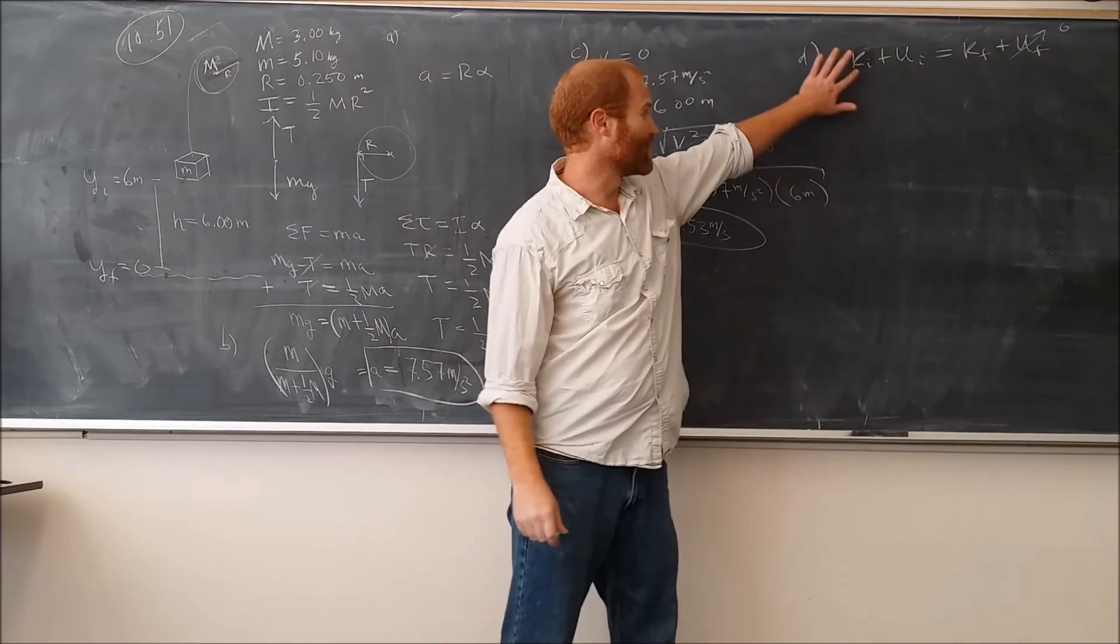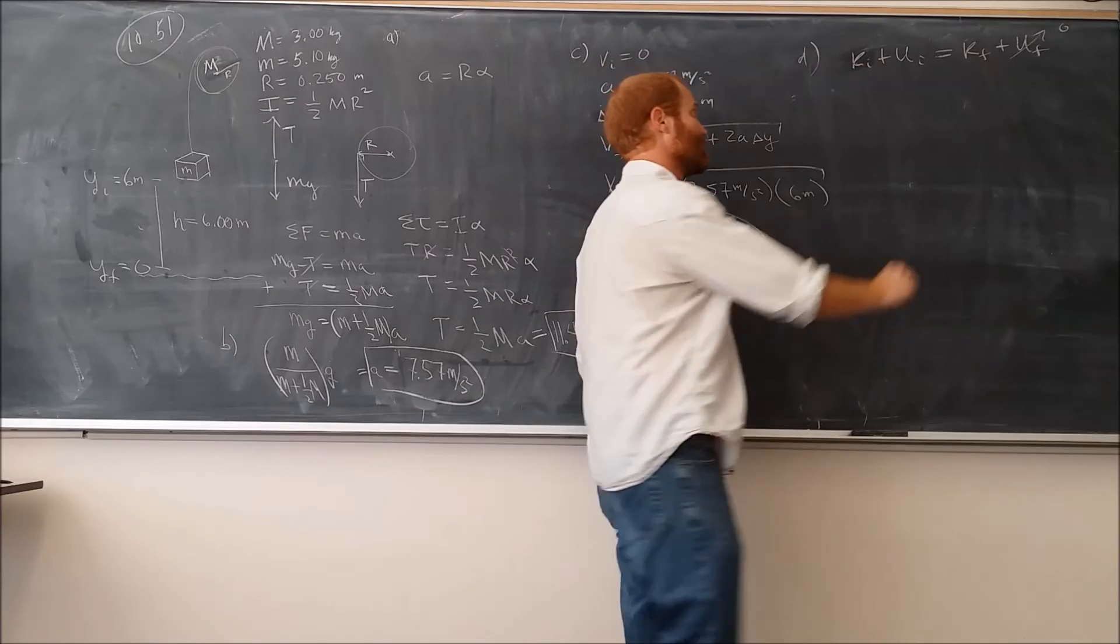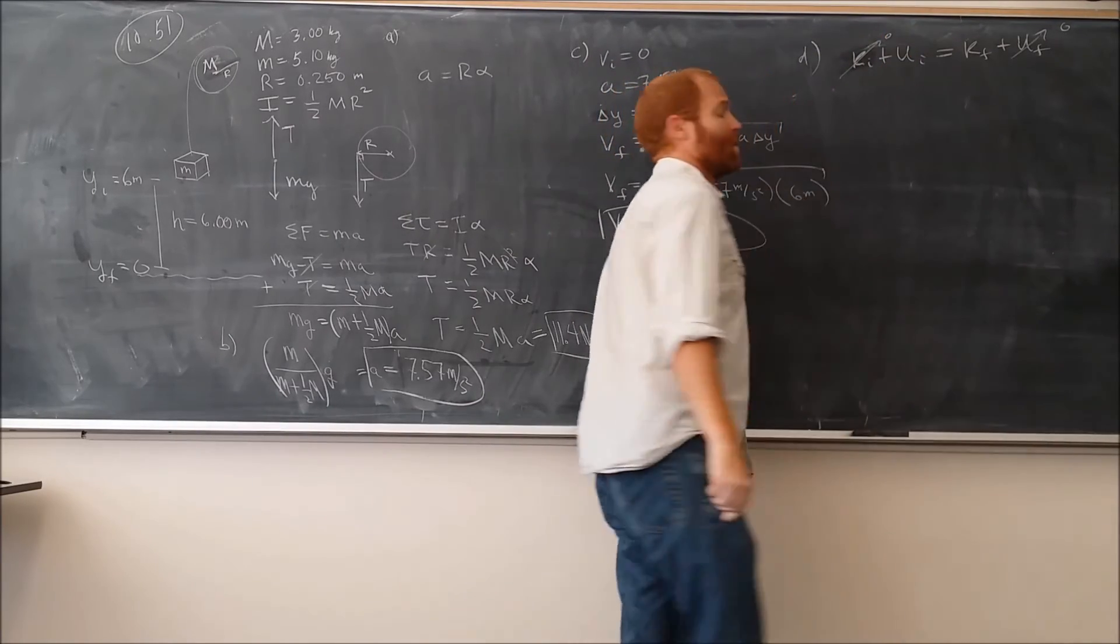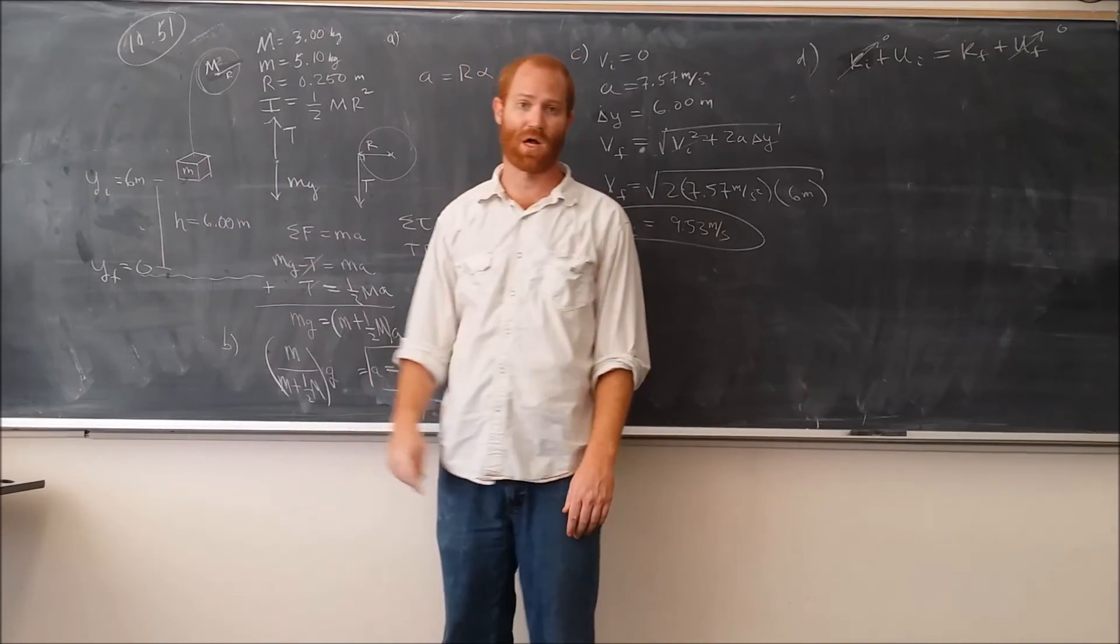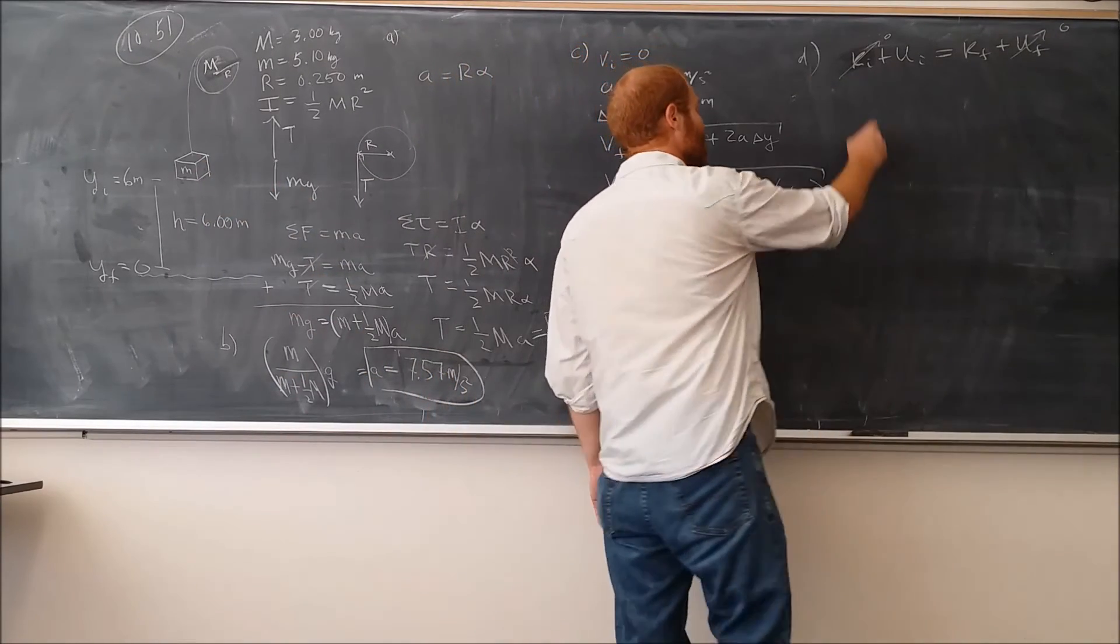That also means, we also know that it starts from rest, which means the kinetic energy initially is zero. So we have this expression here. The initial potential energy is just going to be given by the potential energy of that block right there, the smaller one. So it's going to be mgh.